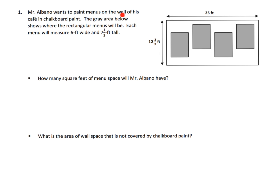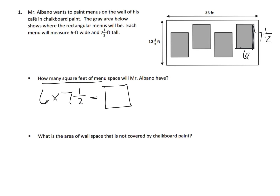The gray area shows where the menus are going to be. Each menu is 6 by 7 and a half — so this is 6 feet wide and 7 and a half feet tall. The question is how many square feet of space will Mr. Albano have? We have four menus, so first we need to find the area of one: that's 6 times 7 and a half. Then take that answer and multiply by 4.